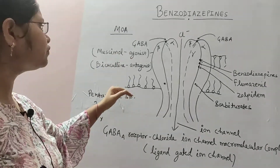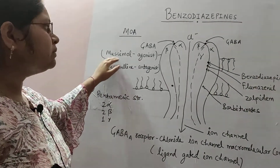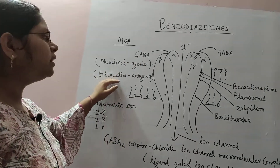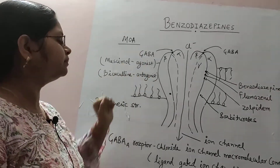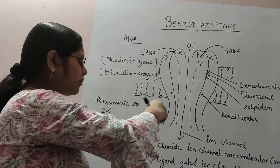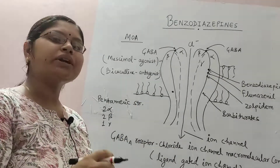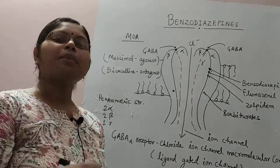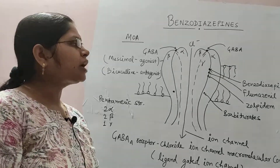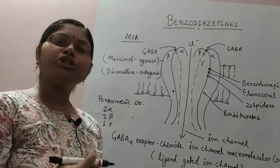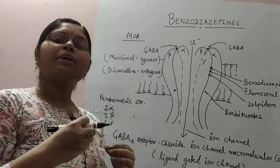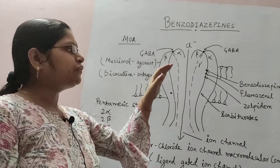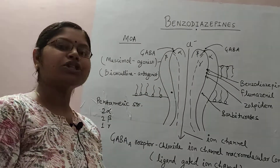Regarding agonists and antagonists for GABA: muscimol is the drug that acts as an agonist for GABA, and bicuculline is the antagonist for GABA. This is the structure of the GABA-A receptor at which different drugs — whether GABA facilitatory, GABA mimic, non-benzodiazepine drugs, or benzodiazepine antagonists — can bind at different sites to exert their action.